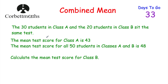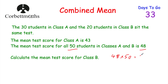In this question we're told there are 50 students altogether, and we know their mean test score. That means if we added up all the test scores for all 50 students and divided by 50, we'd get 48. So if we take 48 and multiply that by 50 — 48 multiplied by 50 is equal to 2,400. So the grand total of all the marks for all 50 students is 2,400.